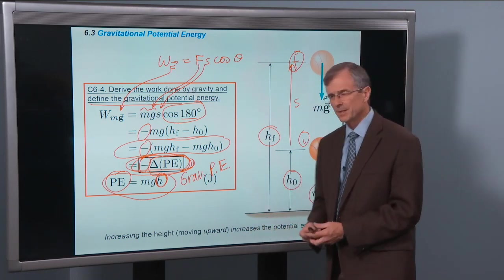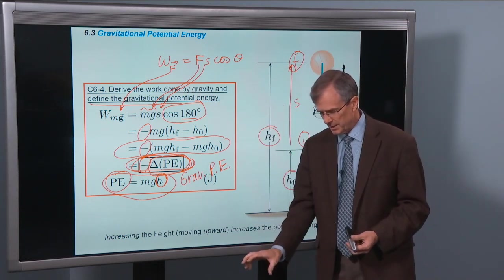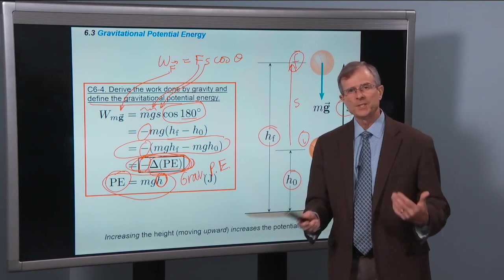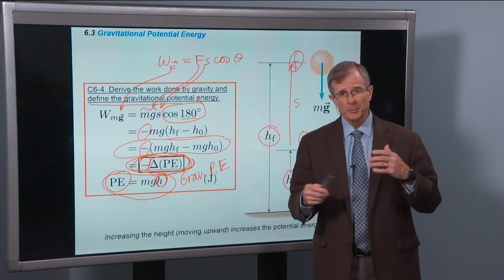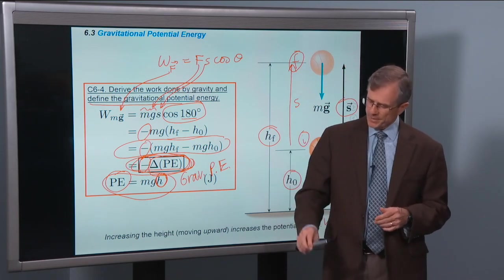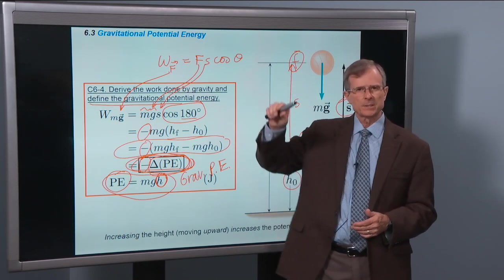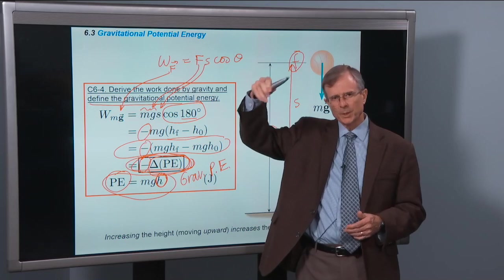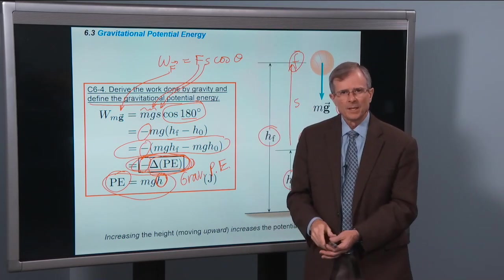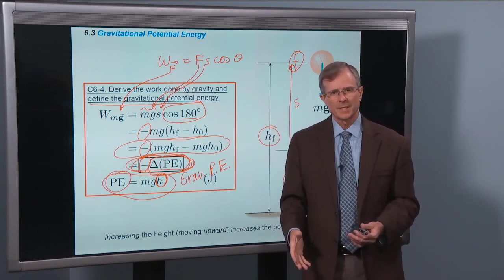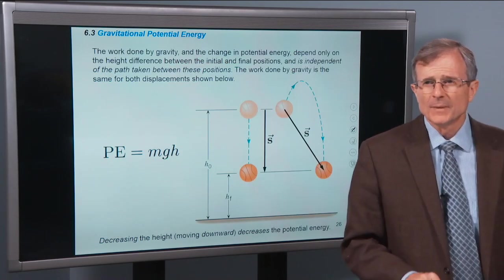And likewise, if we were to take this as my initial and move it down, as I lower an object, I'm going to decrease the potential energy. So the way to think about gravitational potential energy, and some of you might have seen this in other courses before, is that as you raise an object, you're actually giving it some potential for kinetic energy. Because the higher I raise this, when I drop it, it's going to have a lot more kinetic energy. So that's one way of thinking about it.